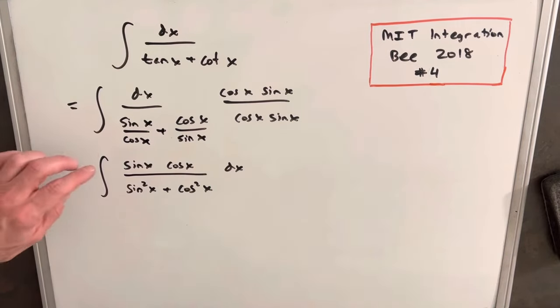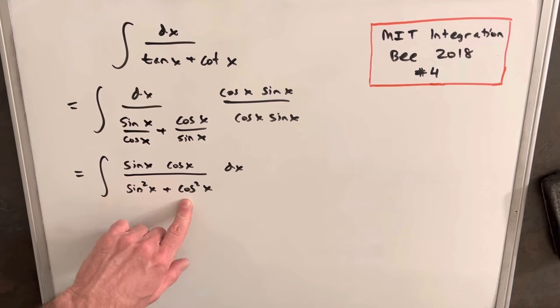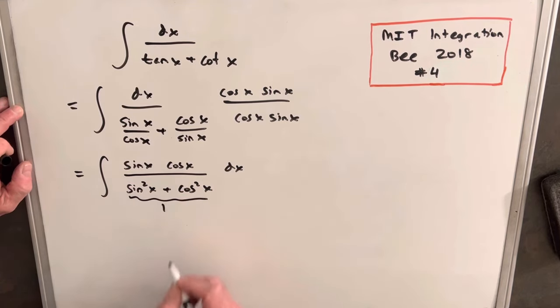So you see, when we multiplied through, we canceled out our cosine and sine in the denominator, but we ended up with sine squared x plus cosine squared x in the denominator, and that's fortunate because this is just one.